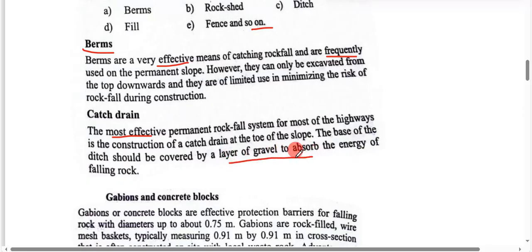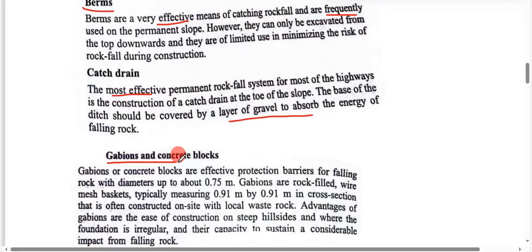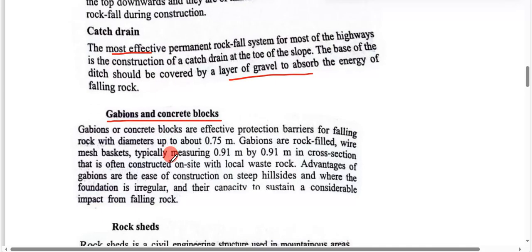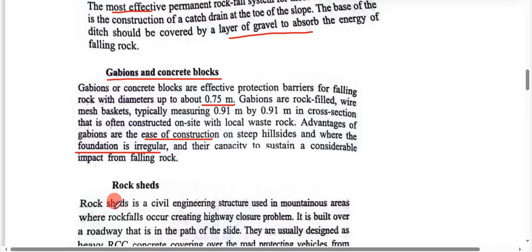The base of the ditch should be covered by a layer of gravel. For gabions, these are rock-filled wire mesh baskets, typically measuring 0.91 meter by 0.91 meter in cross section. The advantages of gabions are the ease of construction on steep hill sites where foundations are irregular, and their capacity to sustain considerable impact from falling rock.